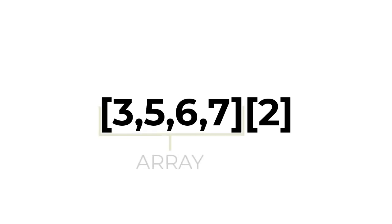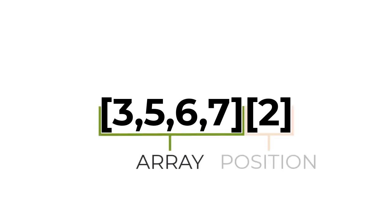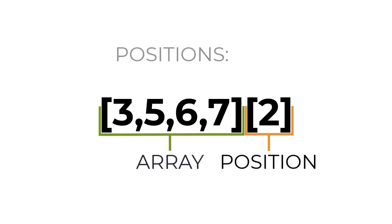Onshape also supports arrays or lookup tables. An example expression is the array seen here, where the first set of brackets serve as the array, and the second set serve as the position. The positioning always starts at 0 and increments by 1.